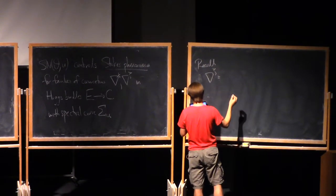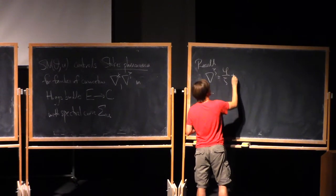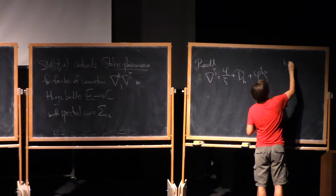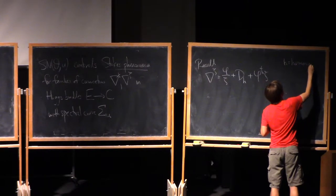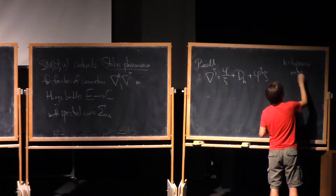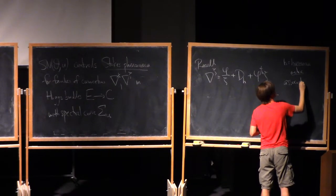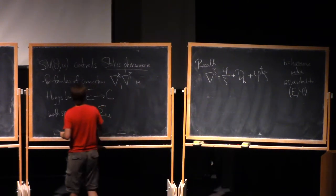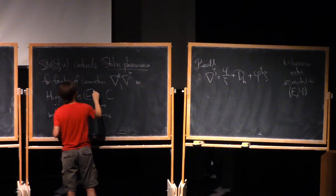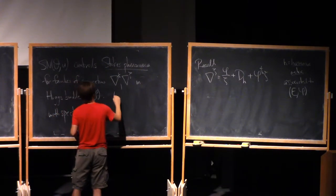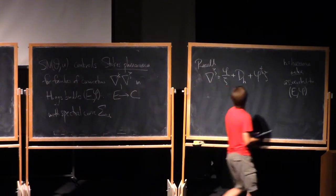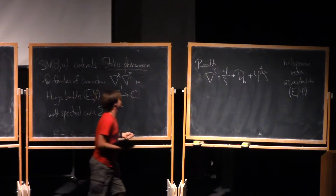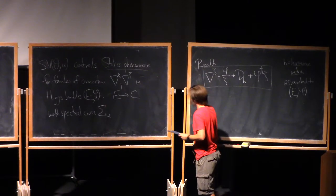This one-parameter family of connections, nabla zeta, was phi over zeta, plus the churn connection, dH, plus phi dagger zeta, where H is the harmonic metric. The solution of Hitchin equations associated to our Higgs bundle, our Higgs bundle, e phi. Over c. So you recall that whenever you have a Higgs bundle, by solving Hitchin equations, you can produce this one-parameter family of flat connections.